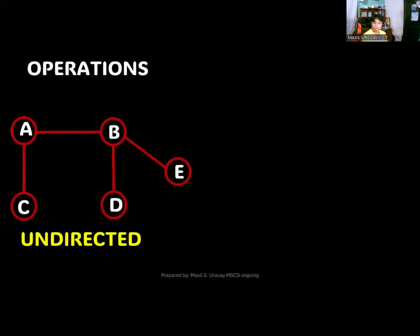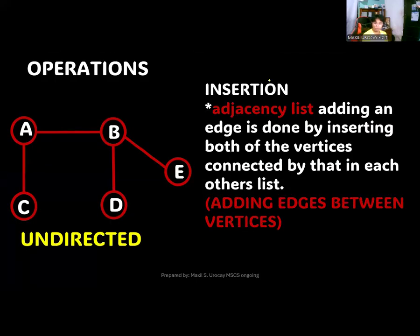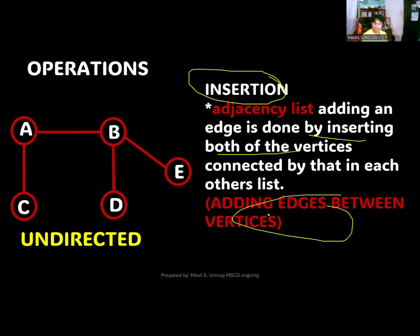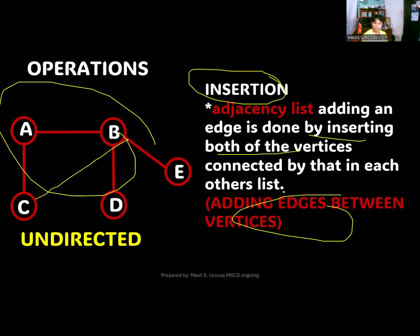First, let's check how insertion in an adjacency list works. For insertion, adding an edge is done by inserting both of the vertices connected by that edge into each other's list. So if you are adding an edge between vertices, for example, you want to add an edge from C to B, that's how you will add it. There will be some update done in terms of the adjacency list, so we'll get the adjacency list first before we can do the insertion.